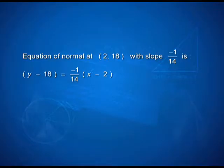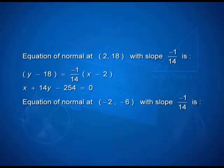That is why the question asks for 'normals' — the plural. So I need two normals and have two answers. The normal at (2, 18) with slope −1/14 turns out to be x + 14y − 254 = 0, and the second normal turns out to be x + 14y + 86 = 0. The slope was something indirect, but we could figure it out because I had a known and an unknown linked together through the concept of the normal slope being the negative reciprocal of the derivative of the function.